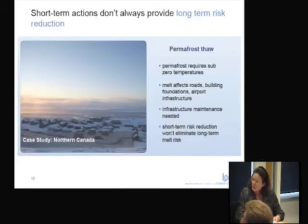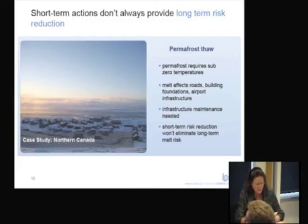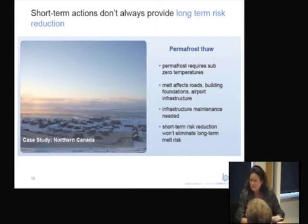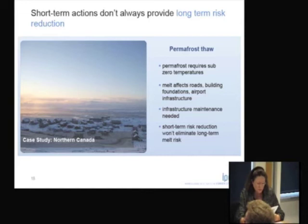We also looked at vulnerable regions. Permafrost areas in the north are of particular concern. Permafrost requires sub-zero temperatures — and that's going to disappear. The effects on road building, foundations, airport infrastructure, and many other things mean that short-term risk reduction won't eliminate the long-term risk.